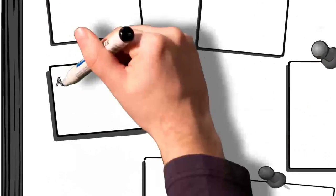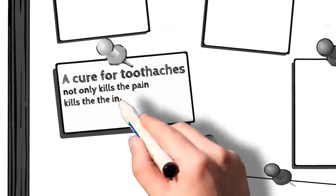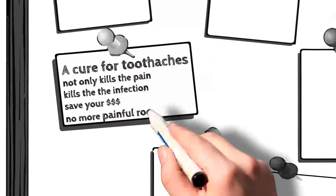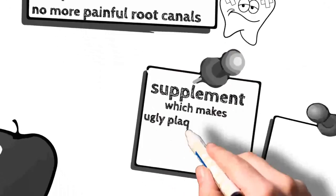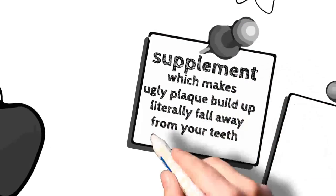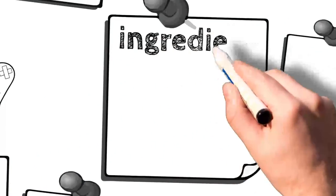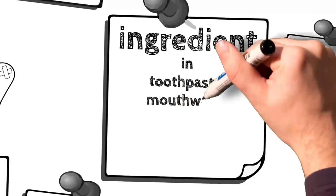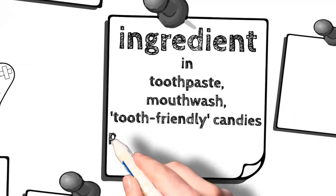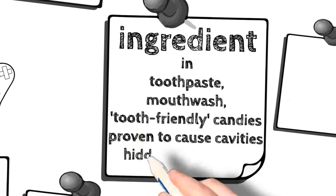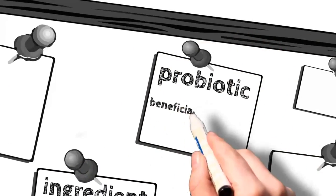In Dentist Be Damned, you'll also discover a cure for toothaches that not only kills the pain, but also the infection. This alone will save you thousands in painful root canals and other dental bills. A supplement which makes ugly plaque buildup literally fall away from your teeth, revealing the beautiful smile, even after years of neglect. An ingredient added in nearly every dental product - toothpaste, mouthwash, and even tooth-friendly candies. Incredibly, it has been proven to cause cavities, but the public and media hasn't been informed yet.